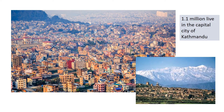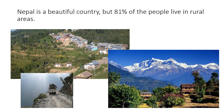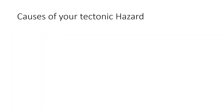Kathmandu is located in a large valley surrounded by mountains. Many of the buildings aren't particularly well built, which means they're vulnerable to collapse in an earthquake. Nepal is an extremely beautiful country, but 81% of the people live in rural areas rather than in big cities. This means it's very hard to access many of the towns and villages located high up on small mountain roads.